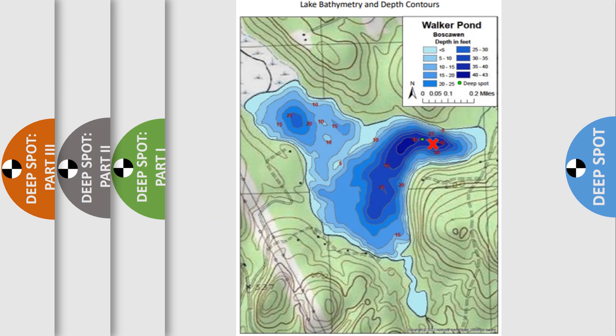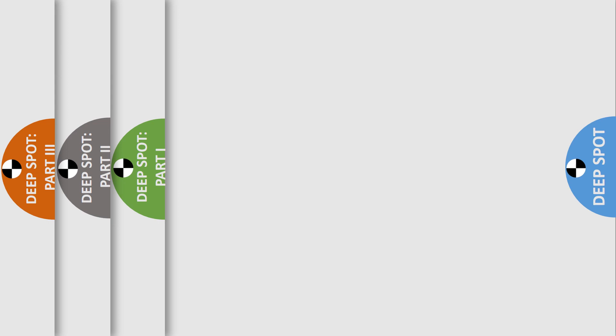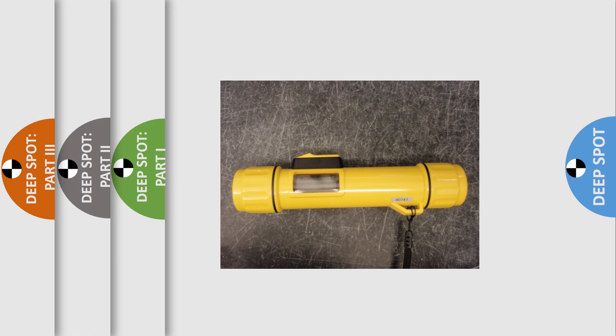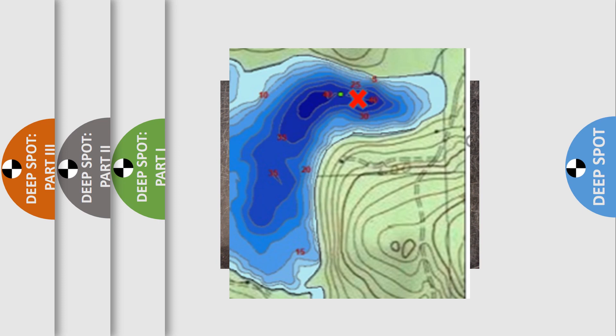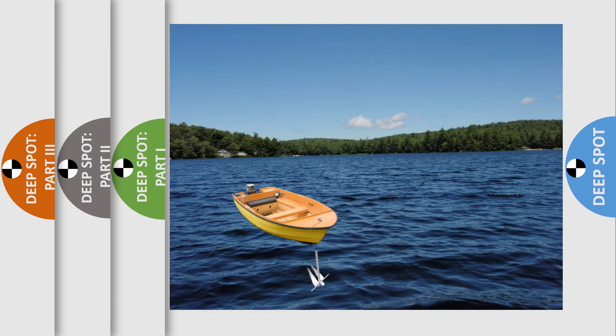You'll want to sample at the same deep spot location each month. The deep spot of your lake has been predetermined by DES biologists based on historical lake bathymetric maps. Navigate to your deep spot and confirm its location using a GPS unit, depth finder, or triangulate your location with three fixed points along the shoreline. Anchor at the deep spot to prevent drifting while sampling.